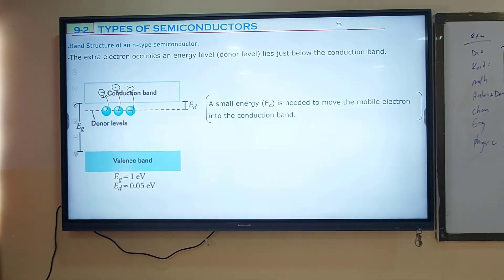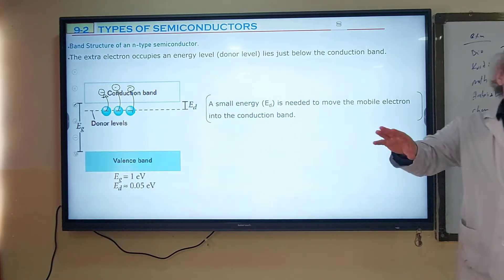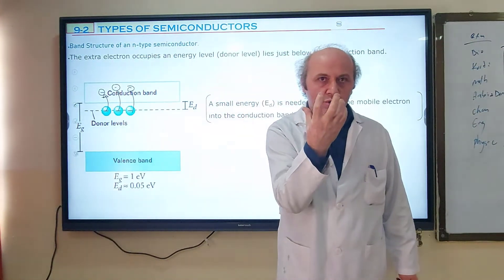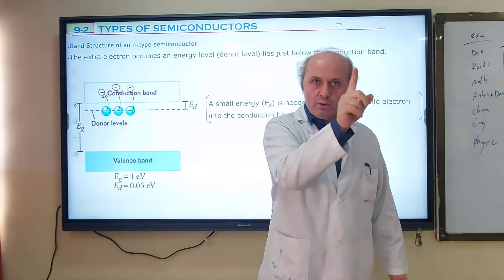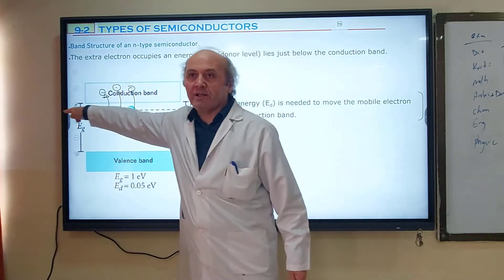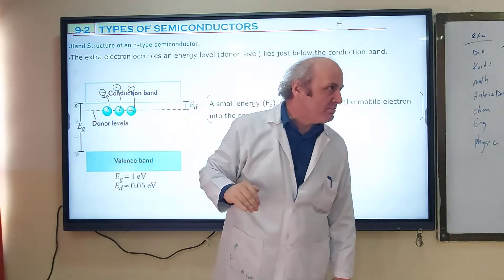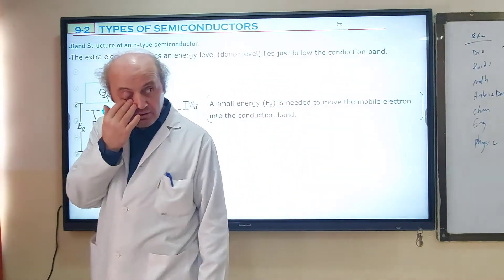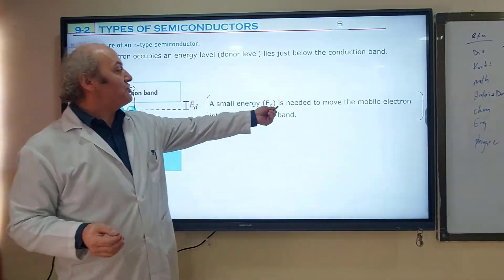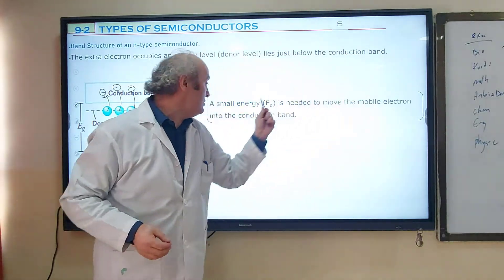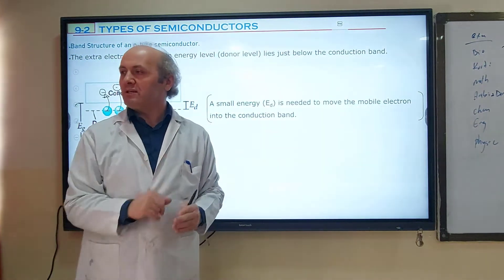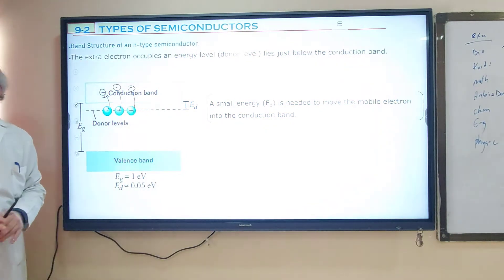A student asks: do electrons jump from the valence band to the donor level? The answer is no. The electrons making bonds are in the valence band, but the free fifth electron's energy level is the donor level, just below the conduction band. It jumps from the donor level to the conduction band. A small energy is needed to move this mobile electron from the donor level to the conduction band, and when it moves to the conduction band, conductivity starts.